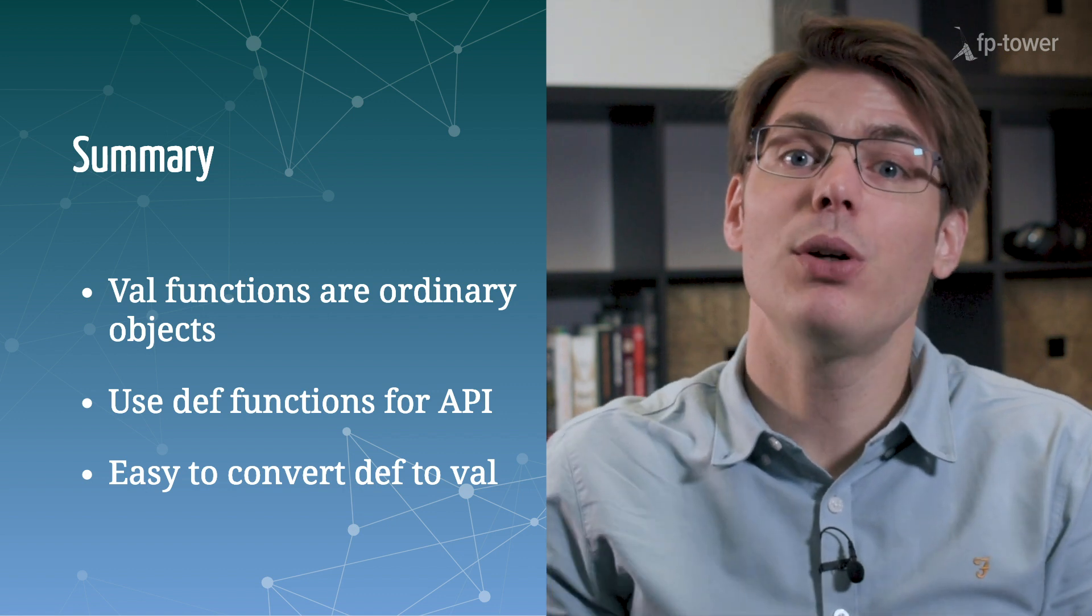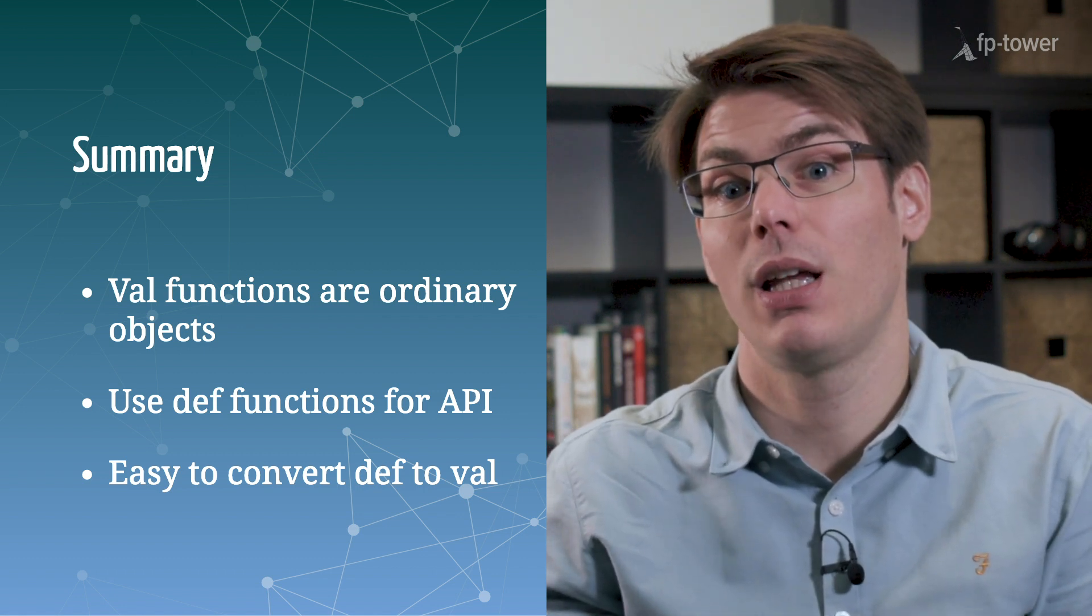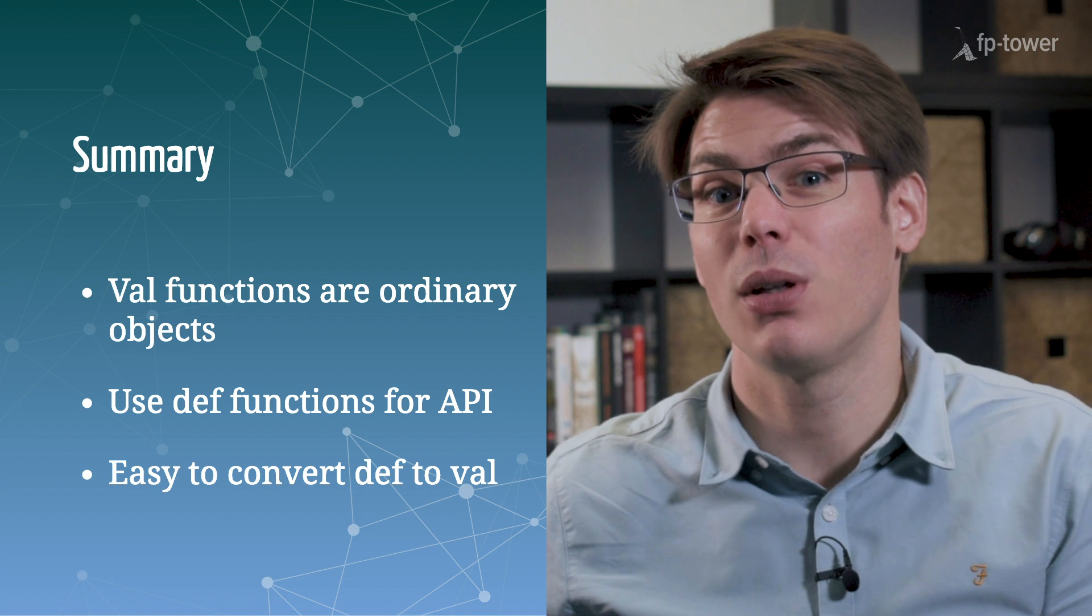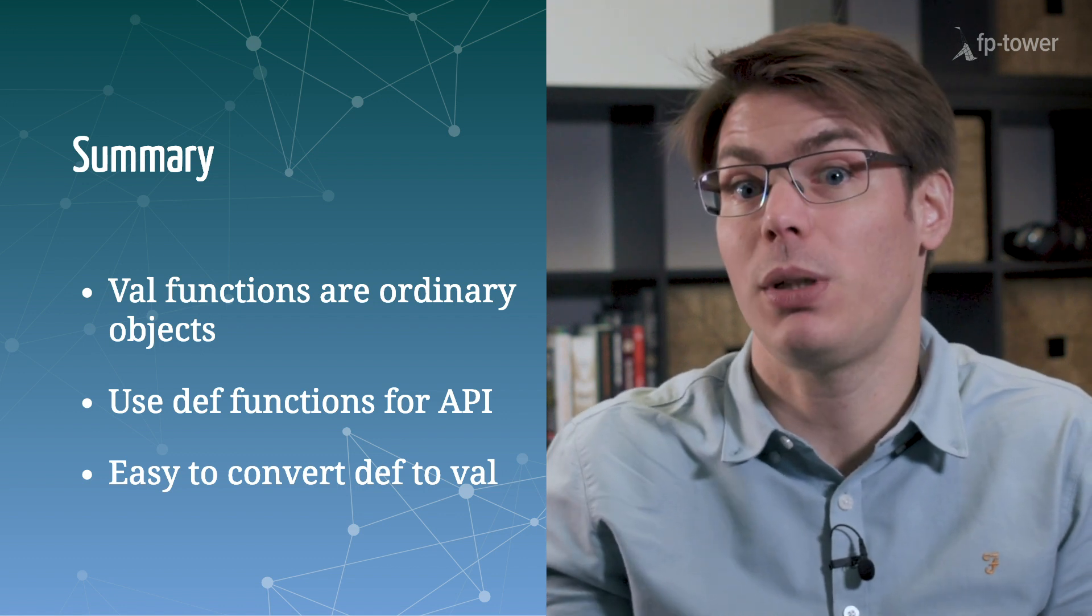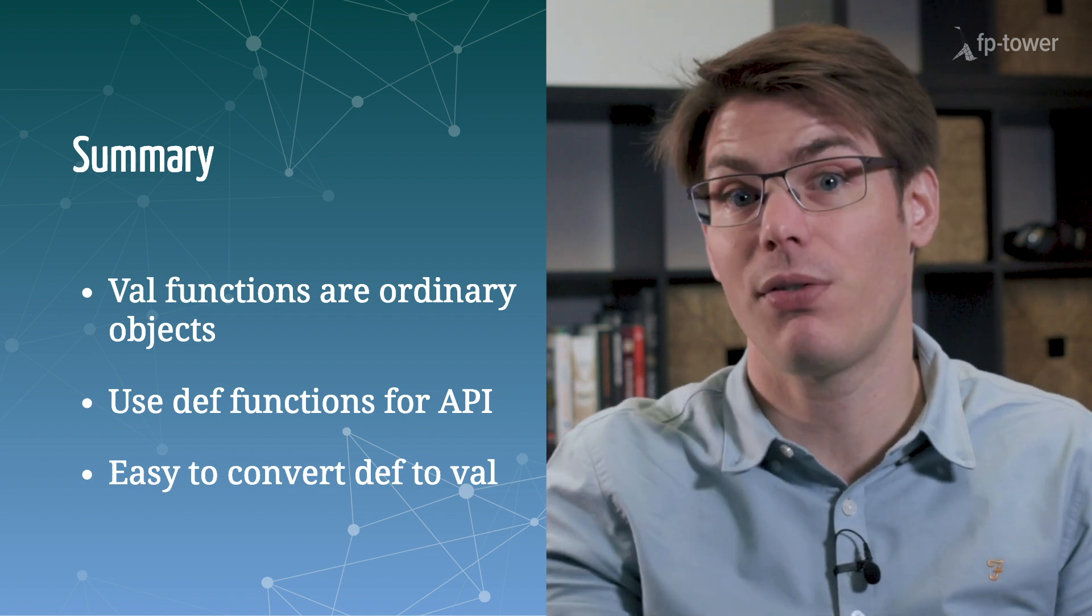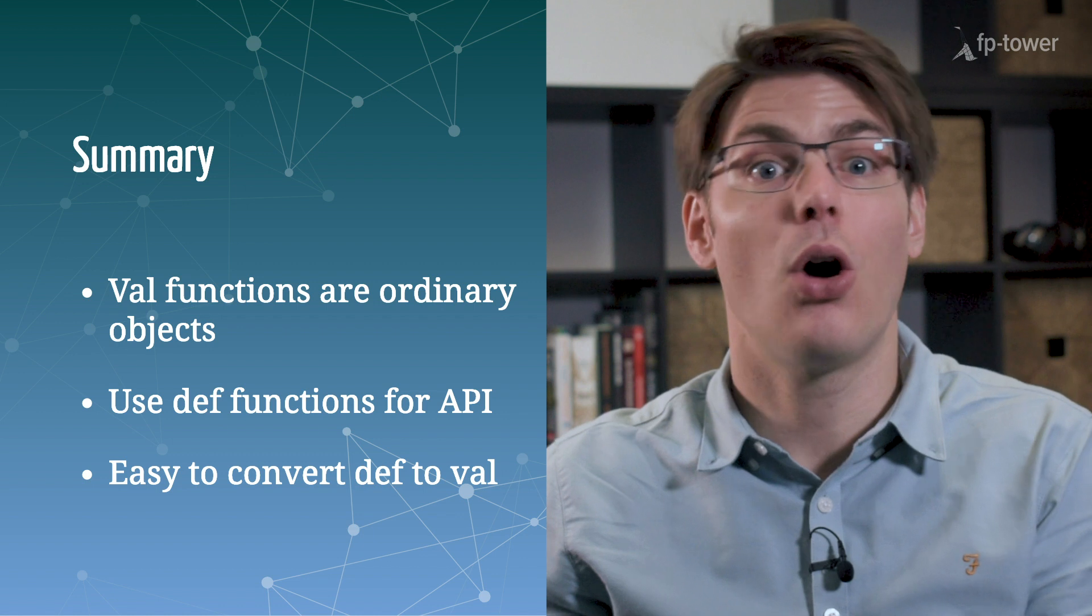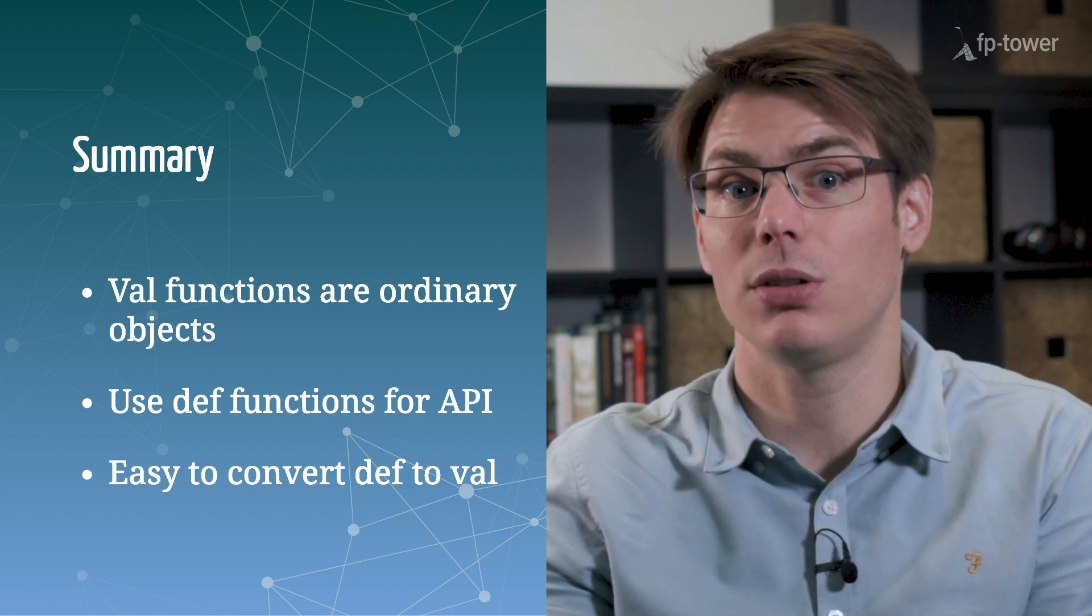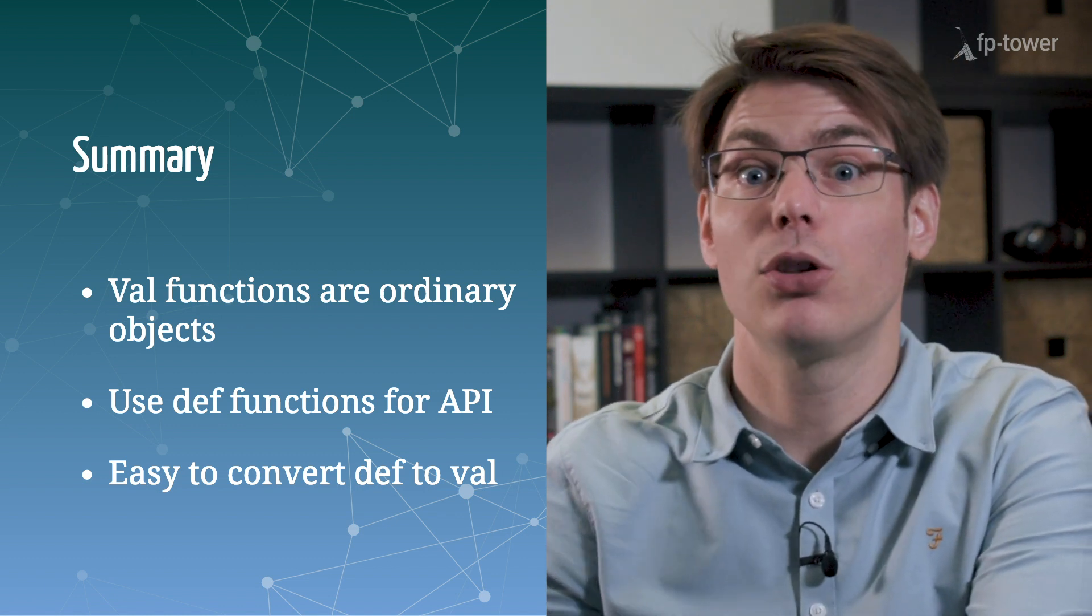To summarize, today we have looked at the difference between val and def functions. In a perfect world, we'd only have one kind of function. Yet we have seen that these two concepts each have their advantages. A val function is a fantastic tool because it's just an ordinary object. So we can use it in any location where we would use an int or a string. Yet it doesn't provide the same kind of information to the compiler or to the rest of the tool chain as a def function. That's why I would recommend using a def function for a top-level API or even by default. And the good thing is, if at any point we need to transform a def function into a val function, this can be done very easily by using the underscore syntax. And in most cases, it's done by the compiler automatically anyway.